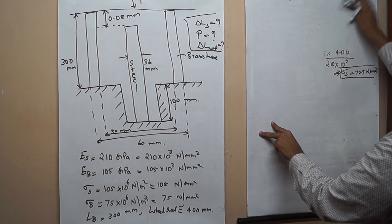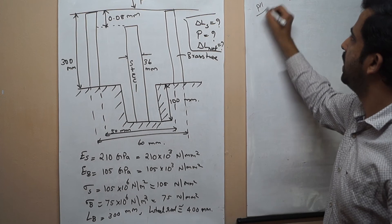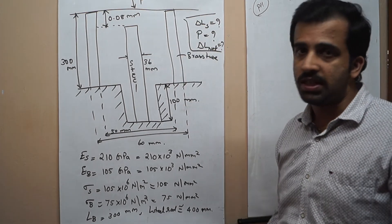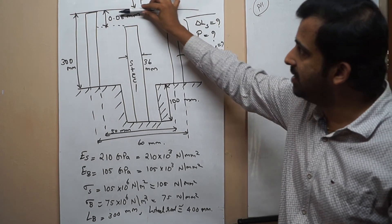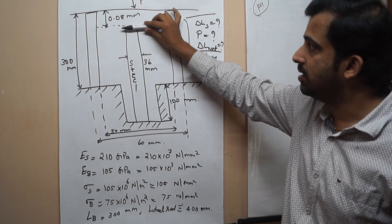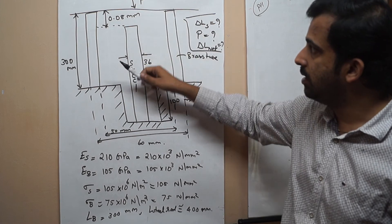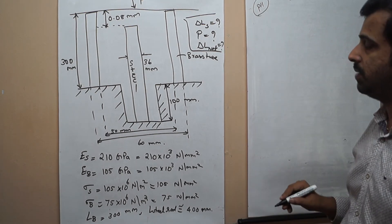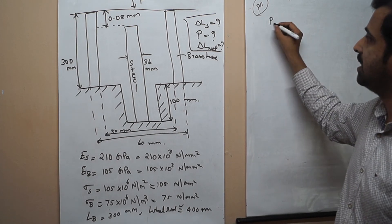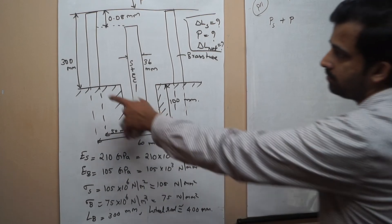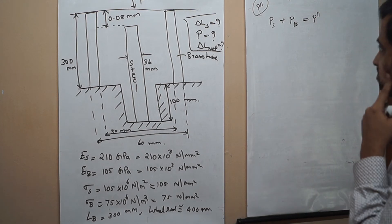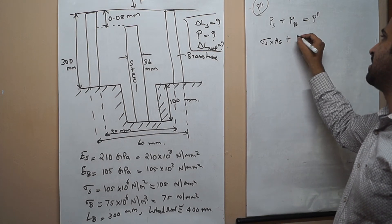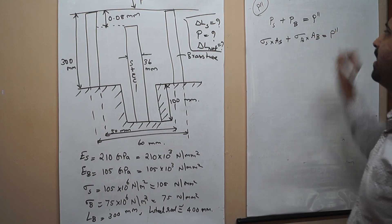Our aim is now to calculate the load P2', which is required for the combined compression of the brass tube and the steel rod. After supplying load P', the top plate is on the surface of the steel rod and both steel and brass compress together. So load on steel plus load on brass equals P2'. Load equals stress times area.